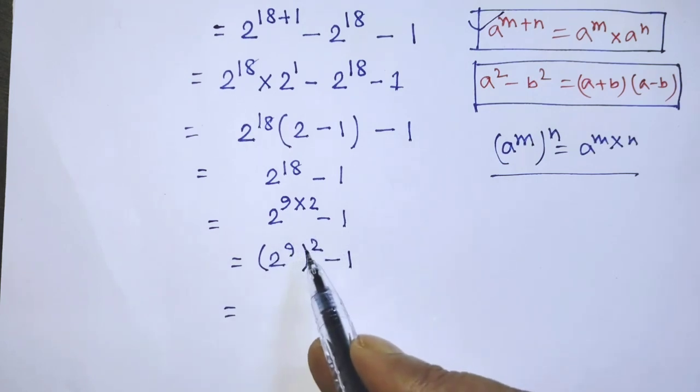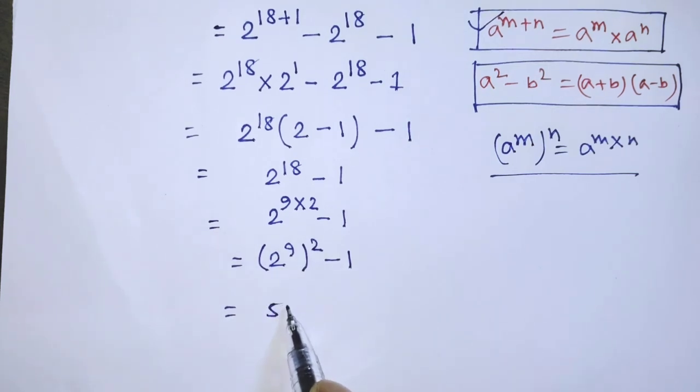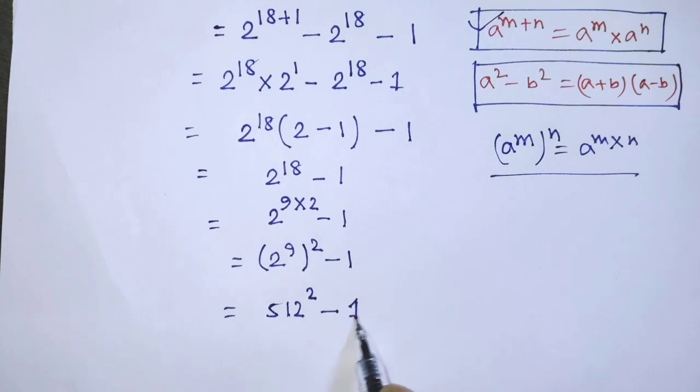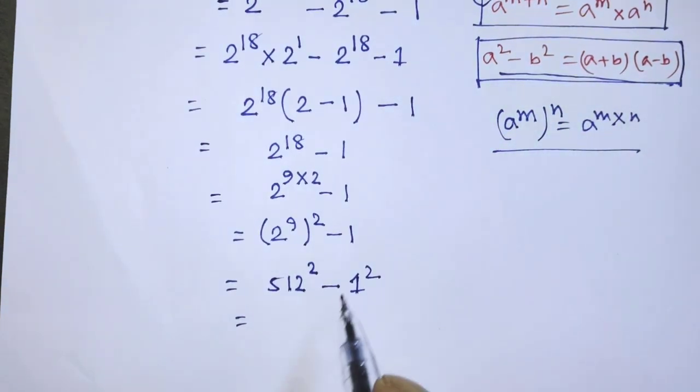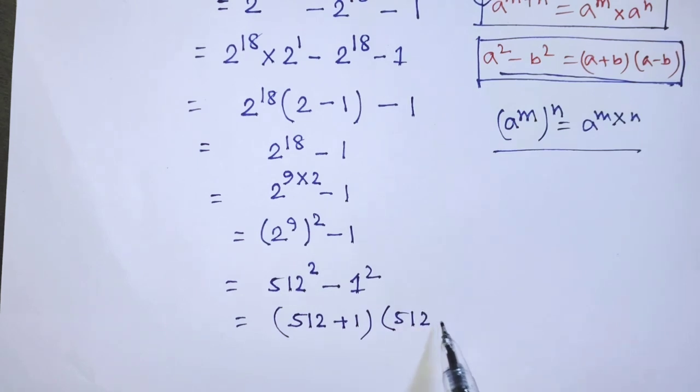In this exponential form, in the place of base, here is 2 to the power 9. So it will be 512 whole to the power 2 minus, in the place of 1, we can write 1 to the power 2. According to this formula, it will be 512 plus 1 times 512 minus 1.